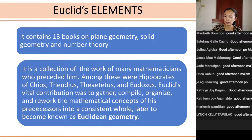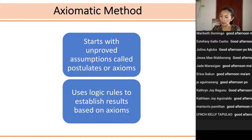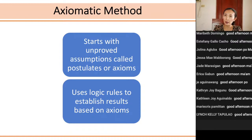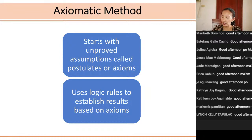The axiomatic method starts with unproved assumptions called postulates or axioms — these are statements that we assume to be true. We don't have to prove these statements. From here we prove some other statements called theorems. To prove theorems we make use of these unproved assumptions or postulates or axioms. There are five postulates in Book One that we will discuss. We use logic rules to establish results based on axioms. This is what we give credit to Euclid for — the axiomatic method, which makes use of rules of logic apart from the assumed postulates.